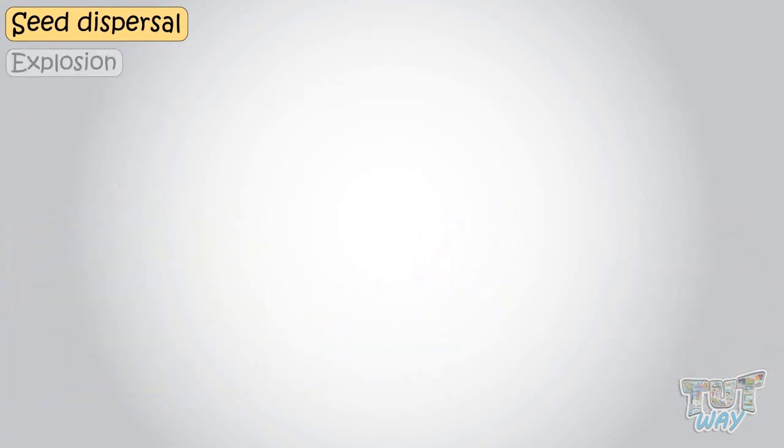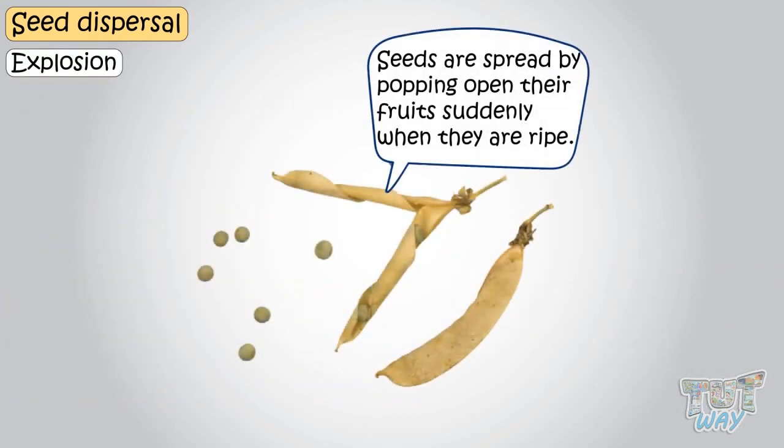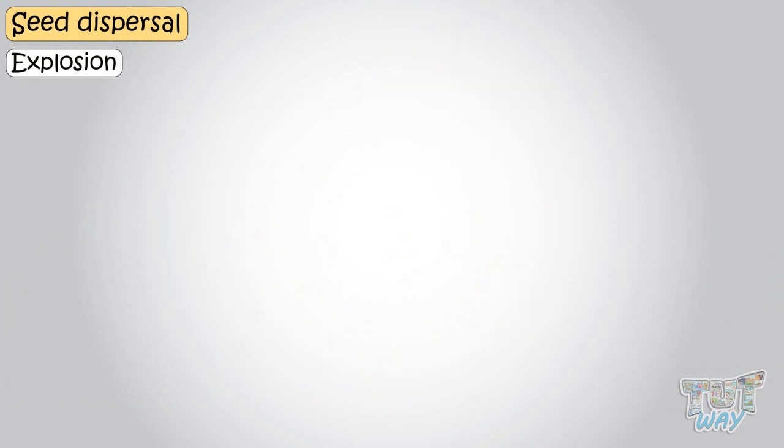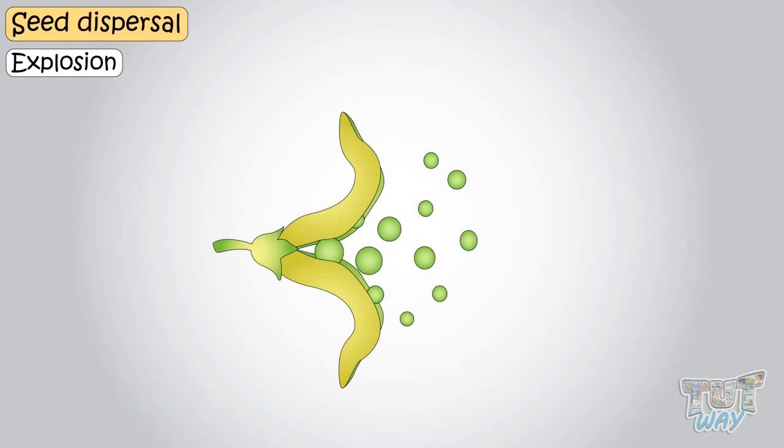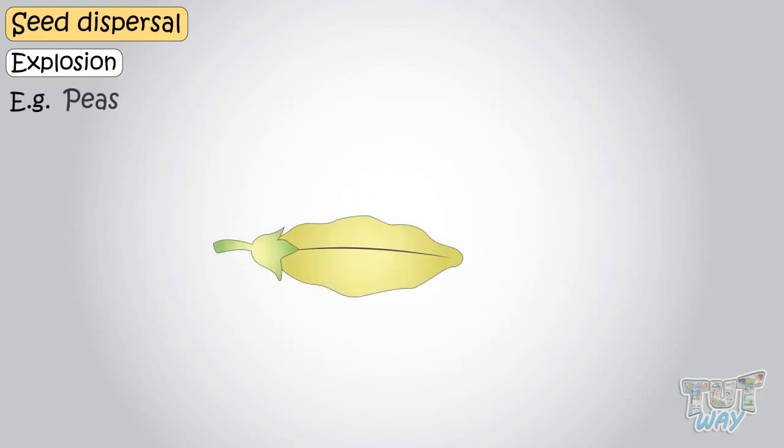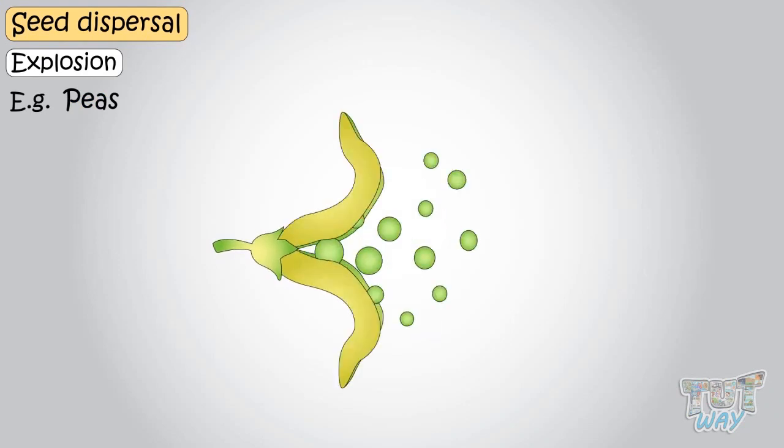In some plants, seeds are spread by popping open their fruits suddenly. When they are ripe, that is fruits explode suddenly when they are ripe. And this explosion spreads the seeds away from the parent plant to distant locations. Examples? Peas. The pea suddenly splits open violently and makes the seeds fly out of the pod in all directions.